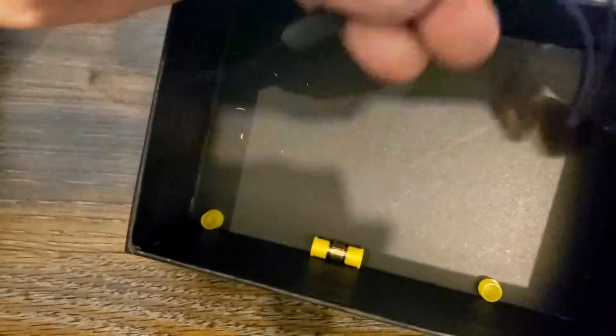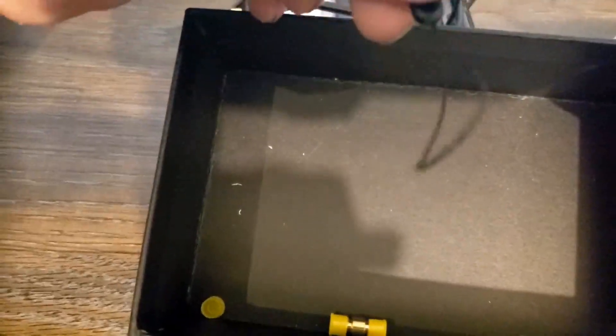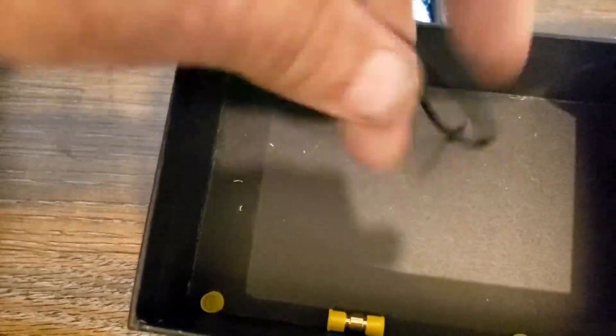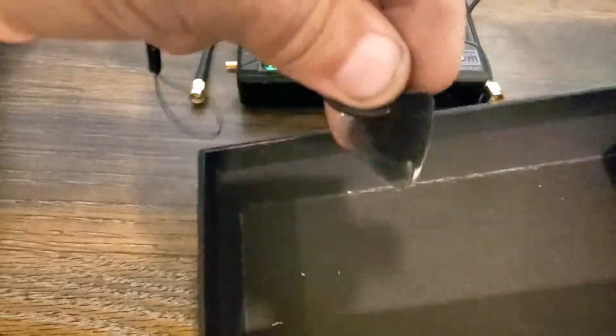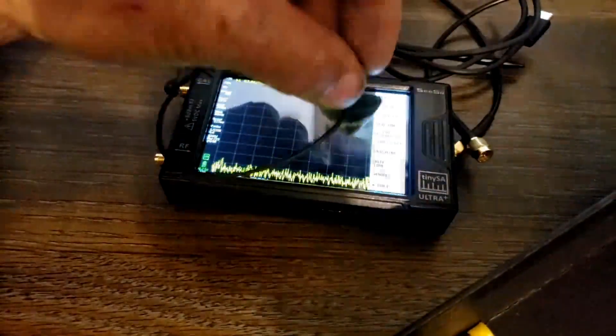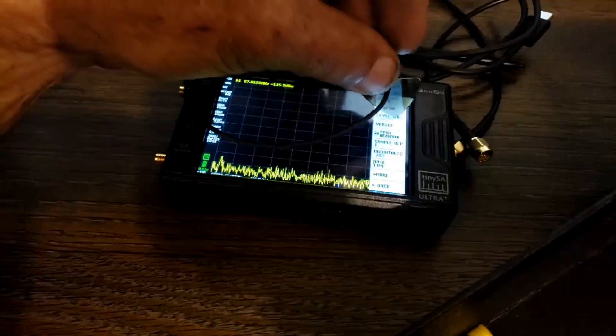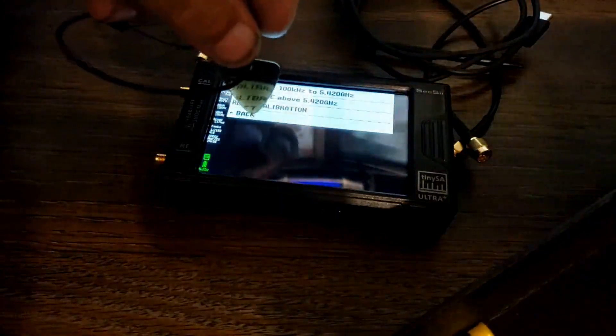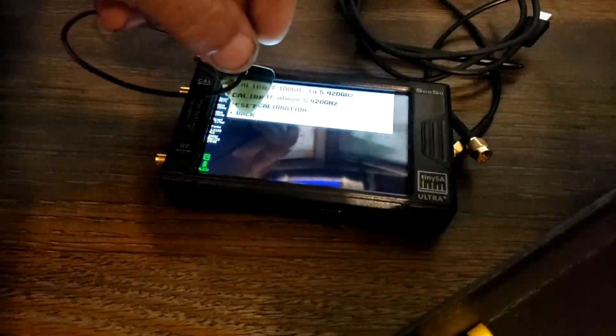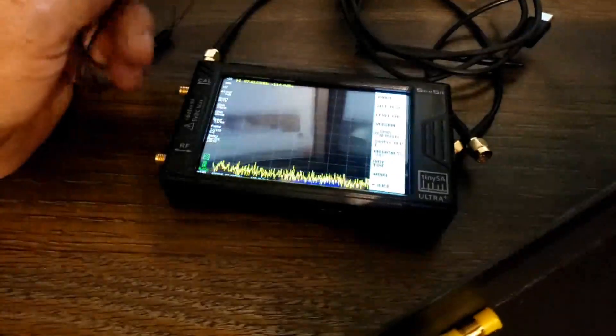And we have what they call a lanyard. That scroll wheel that's on it, this attaches right next to that, and that guitar pick looking thing is for the touch screen. You can just use the guitar pick.